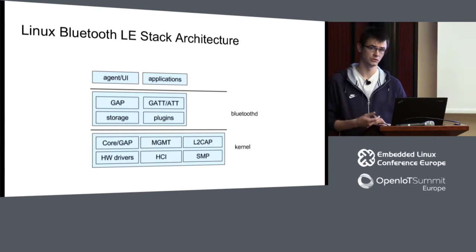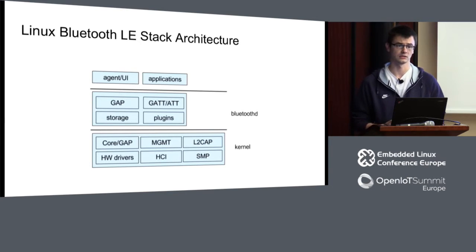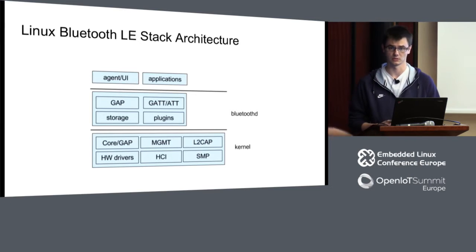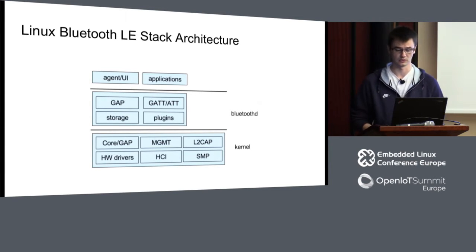On the user-space side, we have BluetoothD — a central daemon that provides high-level APIs over D-Bus that applications can use. It implements GATT; by that I mean it uses what the kernel provides and exposes it to D-Bus. ATT and GATT are implemented in user space inside the daemon. It provides storage — saving keys, caching GATT databases, and so on — and it is extensible with plugins if needed.